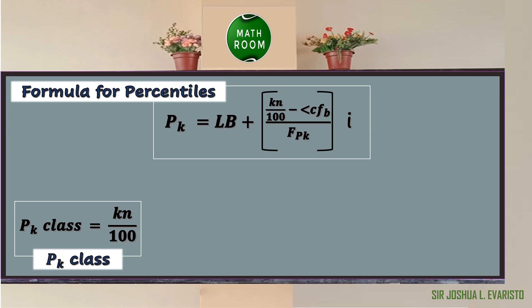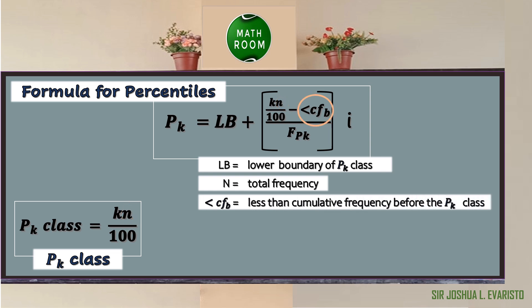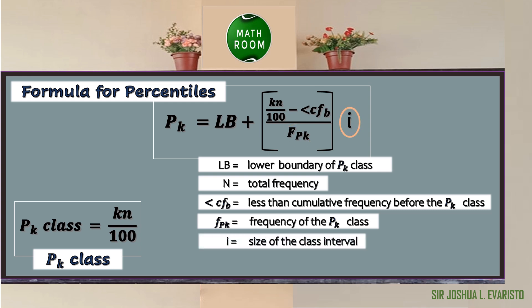size of the class interval. Again: LB is the lower boundary of the P_k class, n is the total frequency, less-than CF_b is the less-than cumulative frequency before the P_k class, f_Pk is the frequency of the P_k class, i is the size of the class interval, and k is the nth percentile.